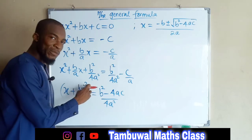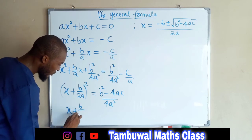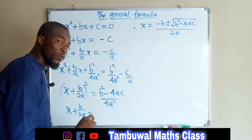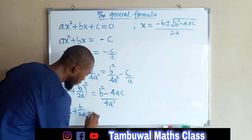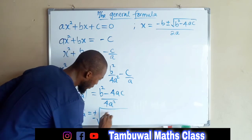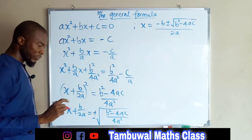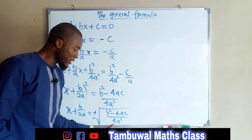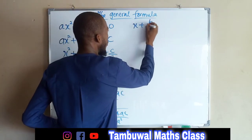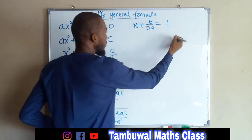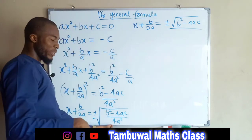We have a square on the left-hand side. To get rid of it, we take the square root of both sides. Taking the square root of the left side cancels the square, leaving x plus b over 2a. On the right-hand side, when you introduce a square root to a term that did not initially have one, you must also introduce plus or minus. So we have plus or minus the square root of b squared minus 4ac divided by 4a squared. We can take the square root of 4a squared — the square root of 4 is 2 and the square root of a squared is a — but we cannot take the square root of the numerator. So the left-hand side is x plus b over 2a, and the right-hand side is plus or minus the square root of b squared minus 4ac, divided by 2a.